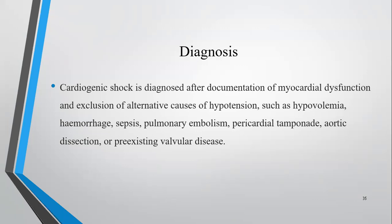Cardiogenic shock is diagnosed after documentation of myocardial dysfunction from lab work, imaging, or ECG, and exclusion of alternative processes of hypotension such as hypovolemia, hemorrhage, sepsis, and pulmonary embolism. Differentials include myocardial infarction, myocardial ischemia, myocarditis, myocardial rupture, angina pectoris, septic shock, bacterial sepsis, and pulmonary embolism.